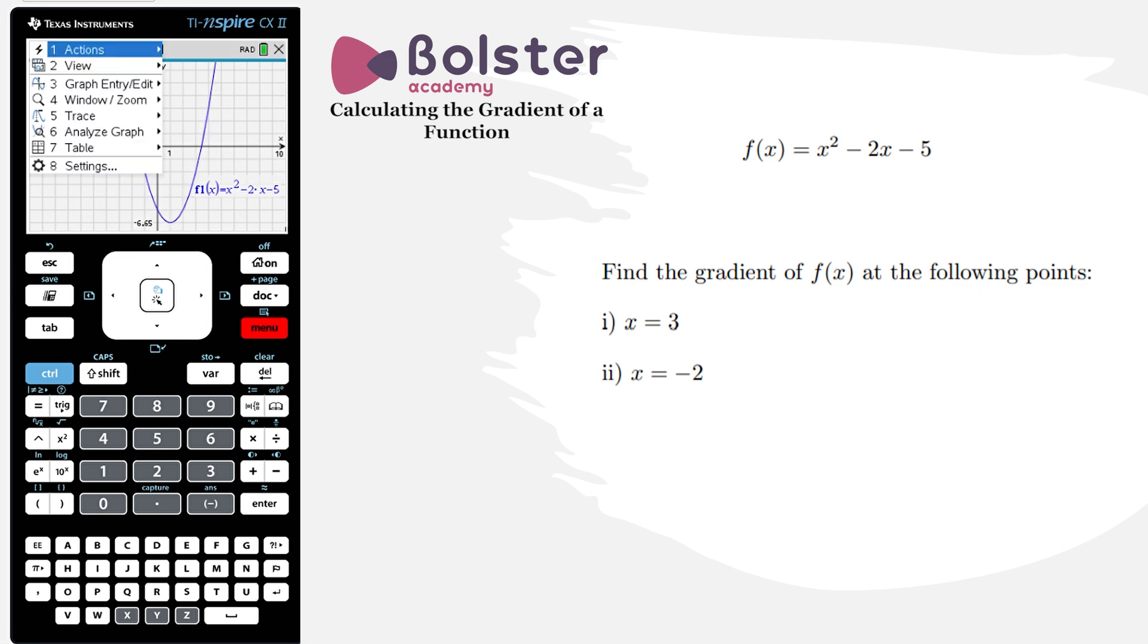I go into Menu, I hit number 6, Analyze Graph, and I choose number 5, dy dx. Now it's asking me for a position on the graph. That's the x value. So I'm going to choose x equals 3 by hitting 3, and then Enter.